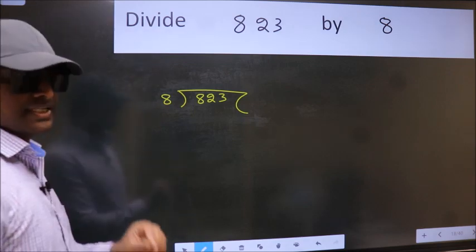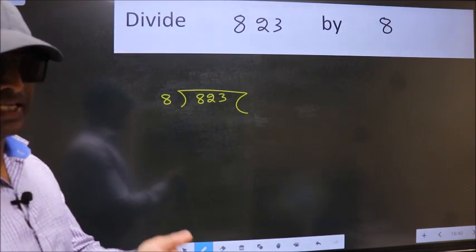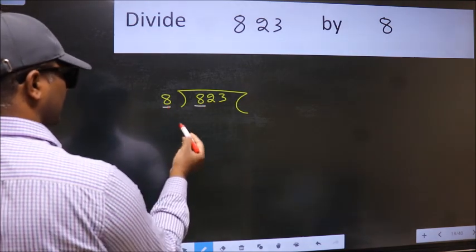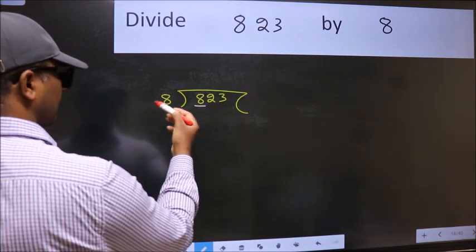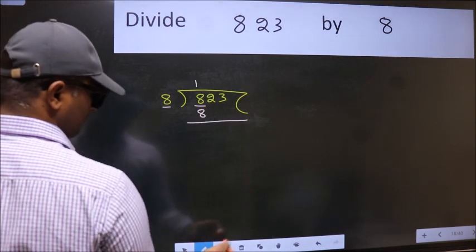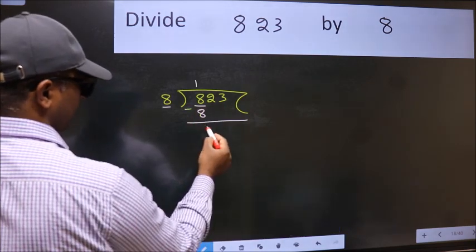This is your step 1. Next, here we have 8 and here 8. When do we get 8 in the 8 table? 8 once 8. Now we should subtract. We get 0.